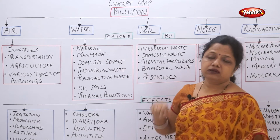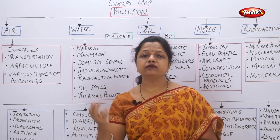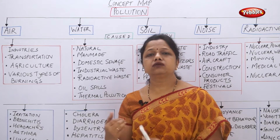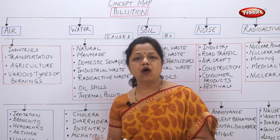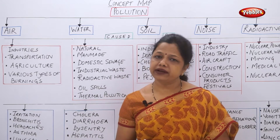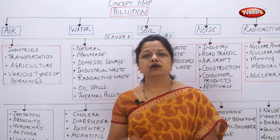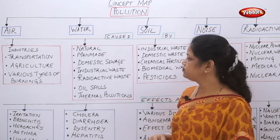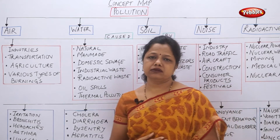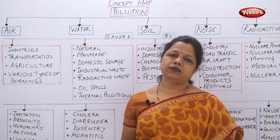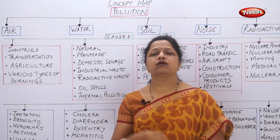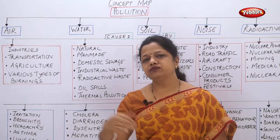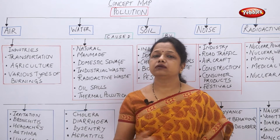Domestic sewage means the sewage coming from the household. We use water in the kitchen, in toilets, and in bathrooms, and all of this gets connected to the drainage pipeline and is collected as sewage, creating pollution in the water. Industrial waste: all industries, whether preparing rubber, plastic, or metallurgy, produce effluent in liquid form that gets mixed with water, adding to water pollution.